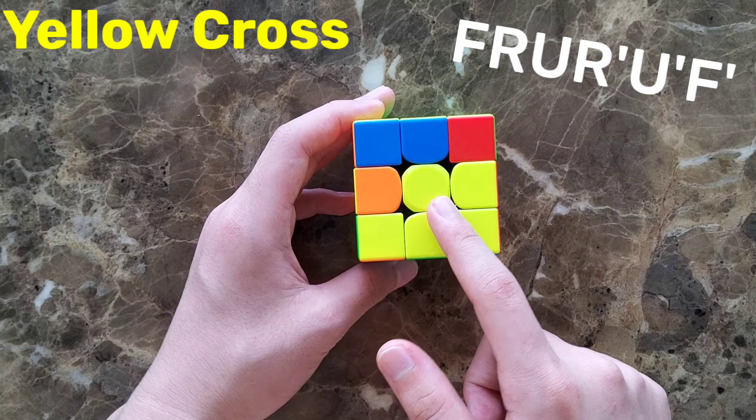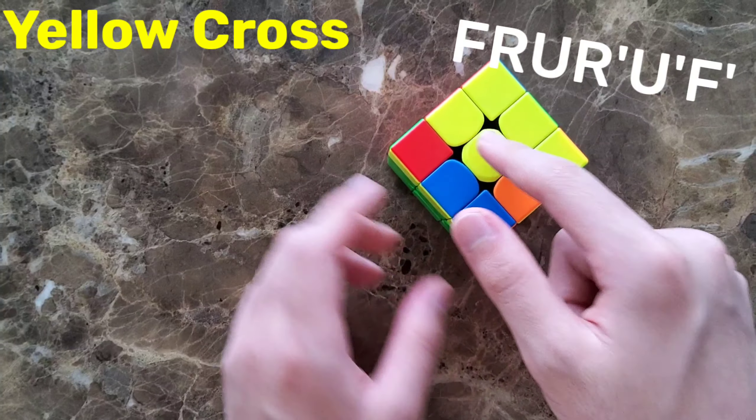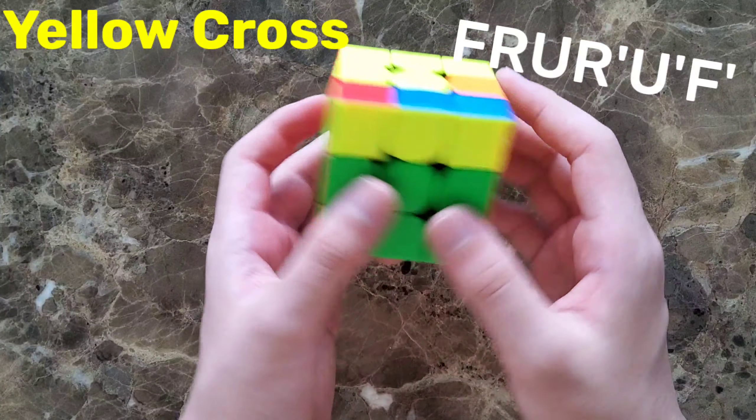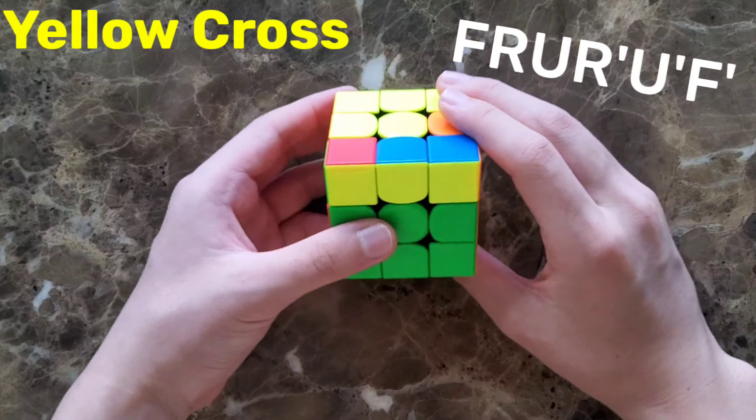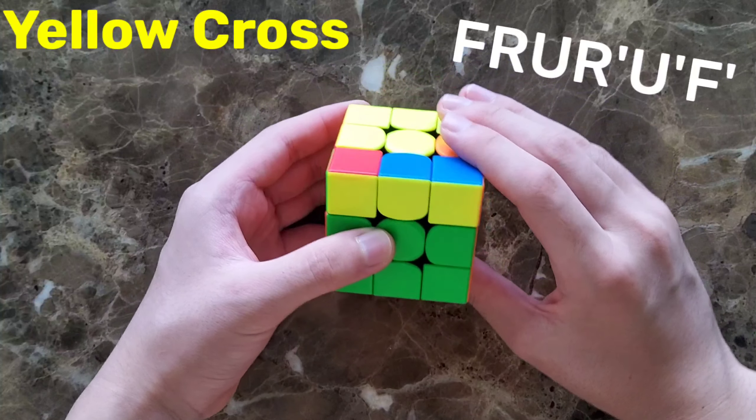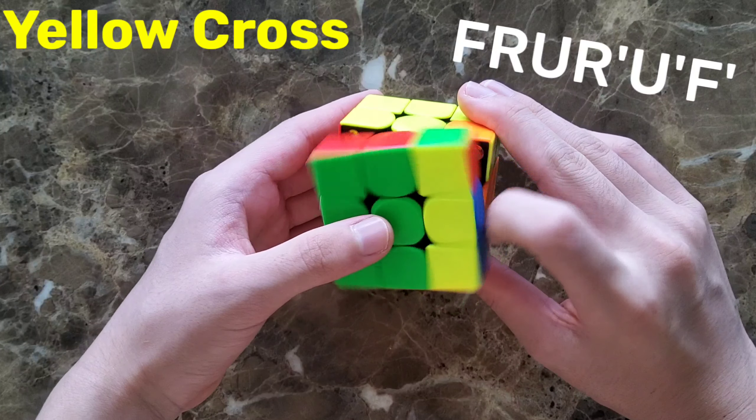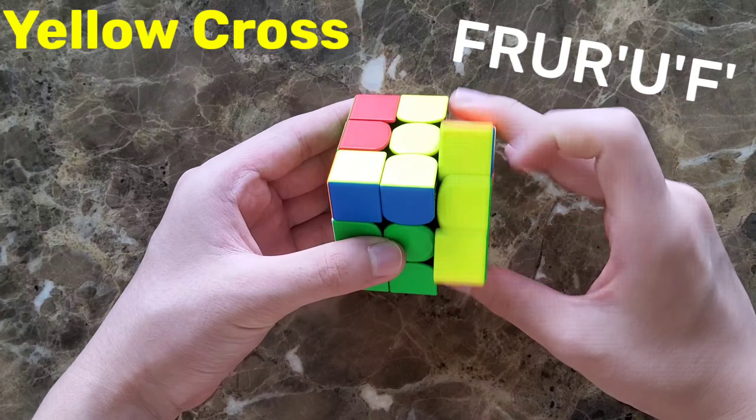Like this. Then you turn the cube like this. You should look at the face like this. Now you use the same algorithm as you did before.